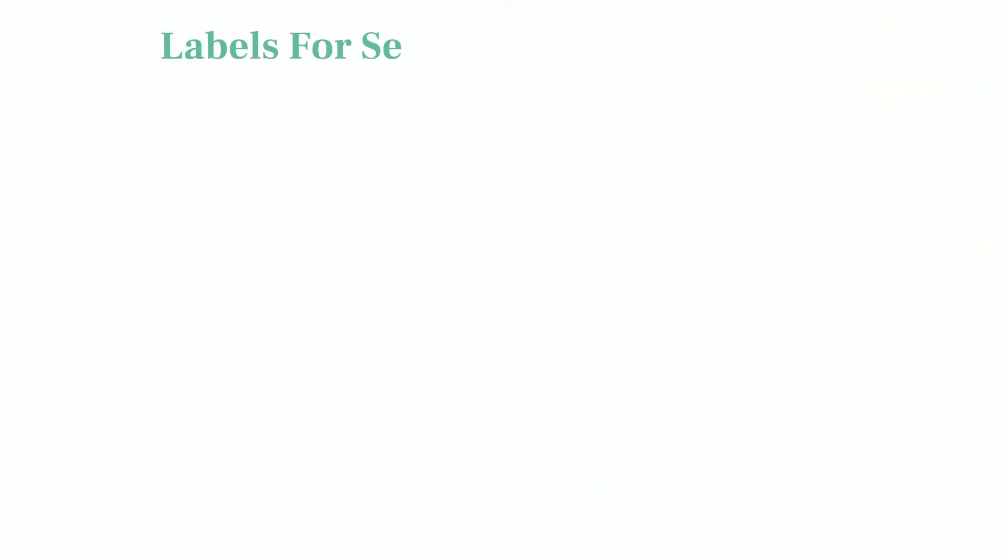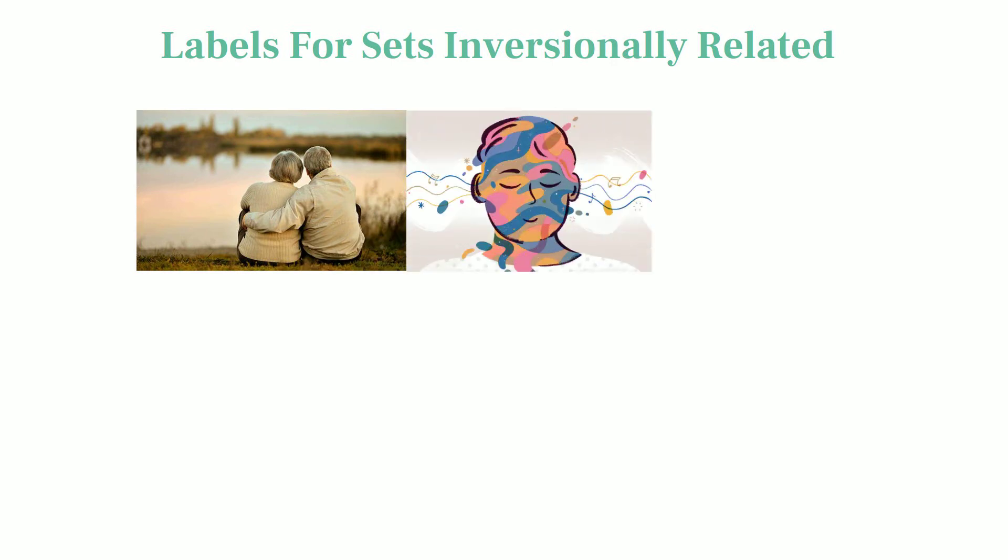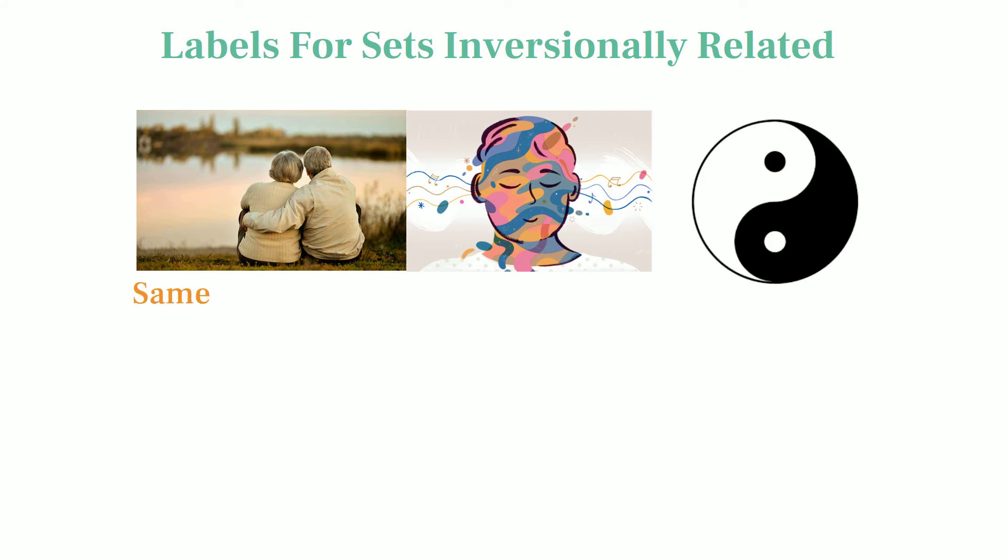We can think of inversionally related sets as married couples. They share a similar quality since they contain the same intervals, yet in some ways are opposites. Like most spouses, they share the same family name in addition to having their own name that distinguishes them from each other.